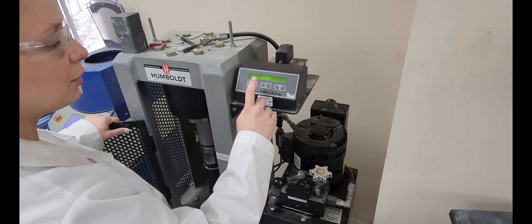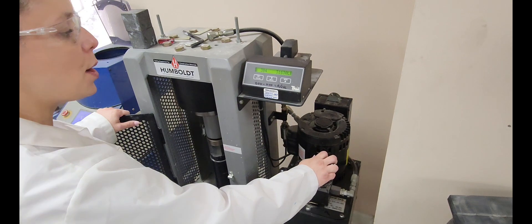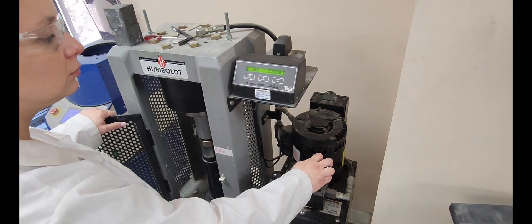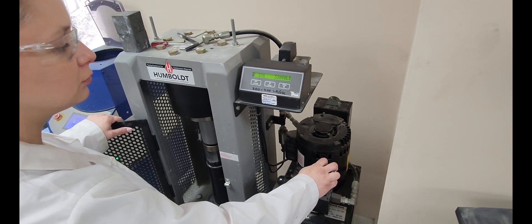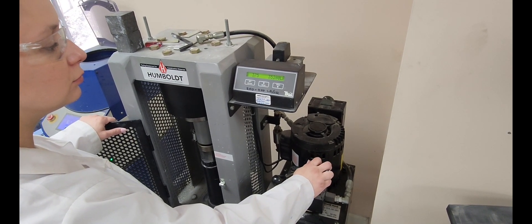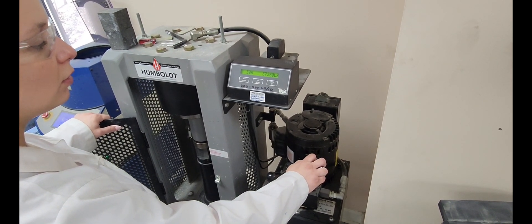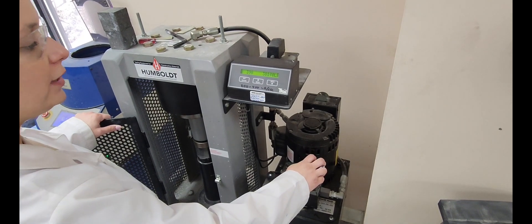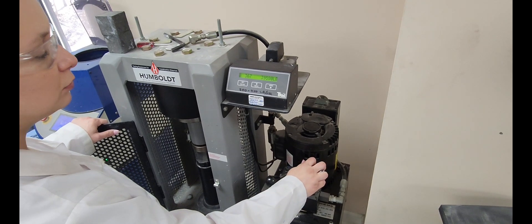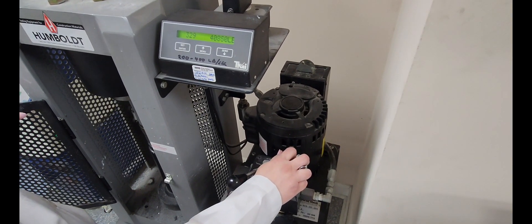I like to keep this number as close to 400 as possible just because that speeds up the test. Once the cube starts to break, we'll see this number start falling drastically. Now we're up above 40,000 PSI.